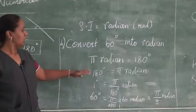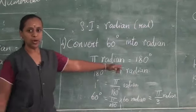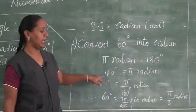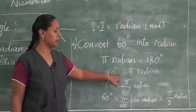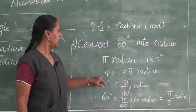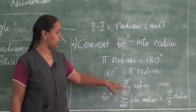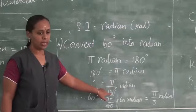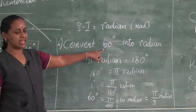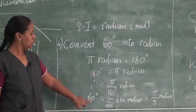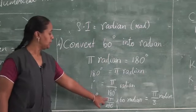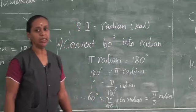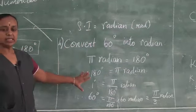To repeat: the formula is π radian = 180 degrees. For convenience we write 180 degrees = π radian, giving 1 degree = π/180 radian. They gave 60 degrees, so 60 degrees = (π/180) × 60 = π/3 radian. Do you understand this sum?